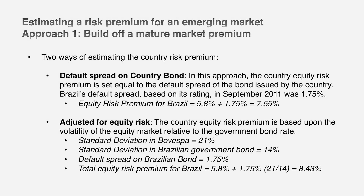One approach builds off the method we used in a previous session to get to a risk-free rate. We start with a government bond rate, came up with a default spread for the country, and netted that default spread from the government bond rate to get a risk-free rate. Now I'm going to use that default spread again to get to an equity risk premium. I start with that default spread — in the case of Brazil, 1.75%. Then I look up the standard deviation in the Brazilian equity index, the Bovespa, which came to 21%, and the standard deviation in that Brazilian dollar-denominated bond used to look up the default spread, which was 14%.